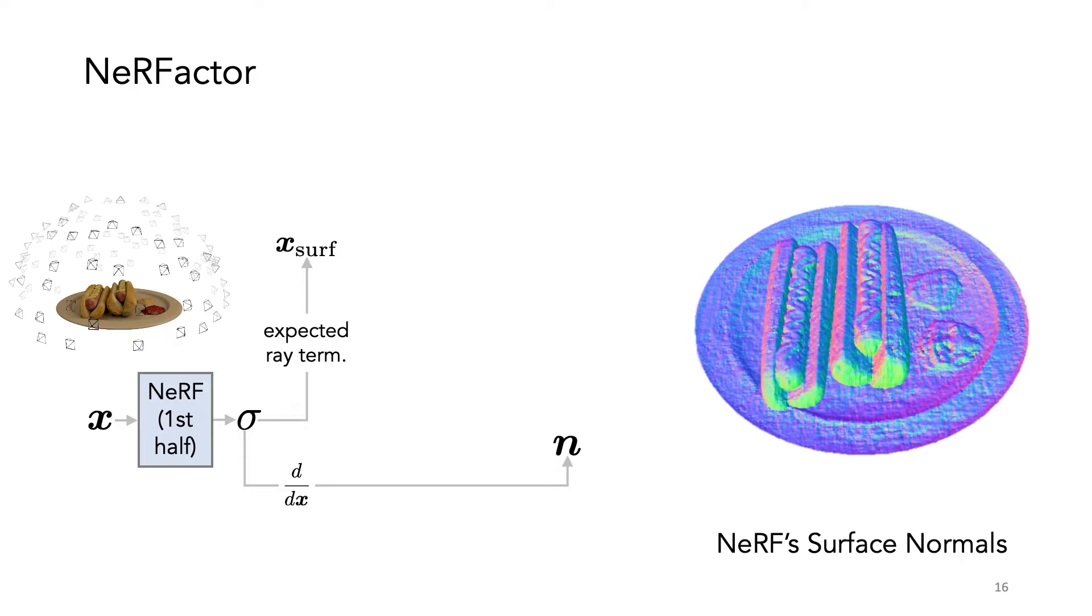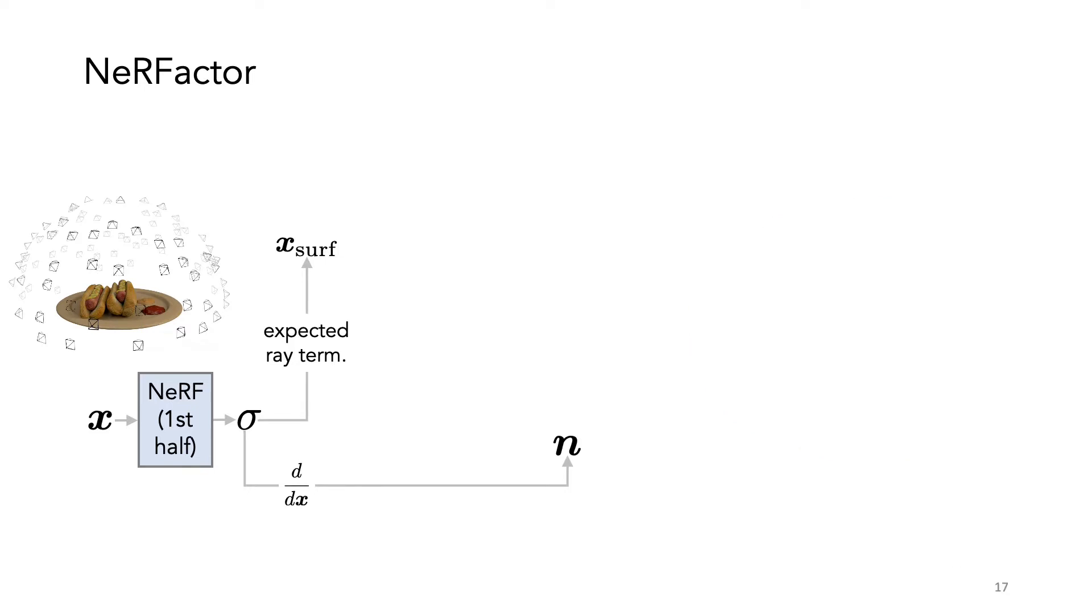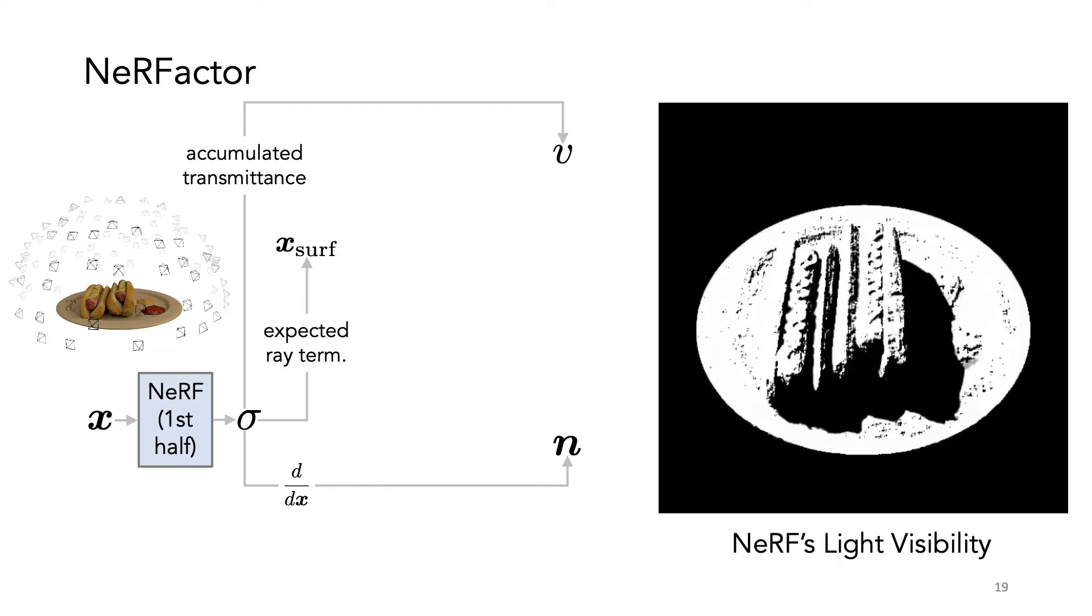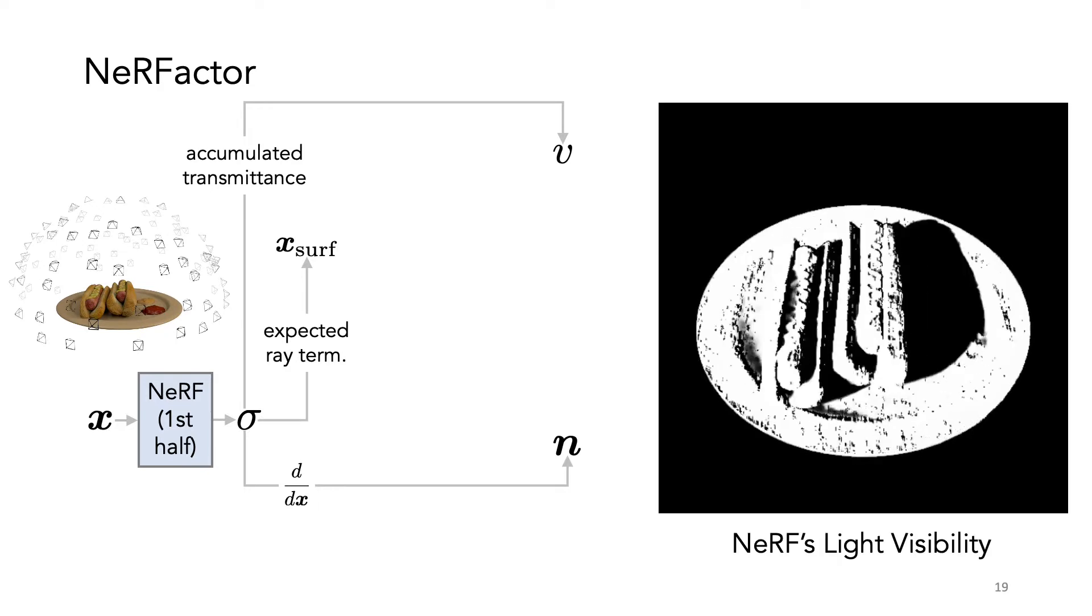These analytic normals are pretty noisy. The third thing we can derive is light visibility by tracing through the Sigma volume to every single light location. The visibility maps are noisy too.